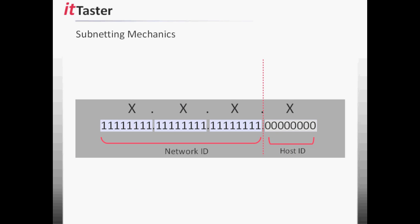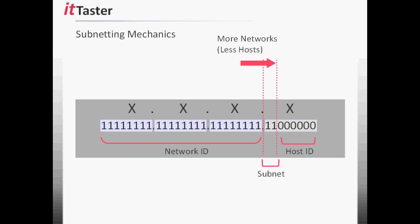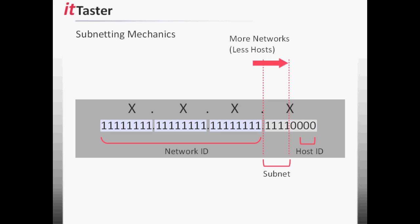Now that we know the most common reasons for subnetting, let's take a look at how subnetting works. Subnetting involves taking an IP network and altering its subnet mask. Host bits are borrowed or traded to become network bits — the network ID is extended and the host ID is reduced. By extending the network ID, additional networks — subnetworks — are created.